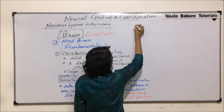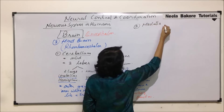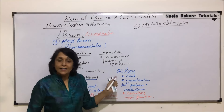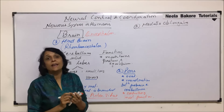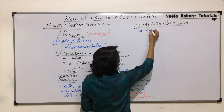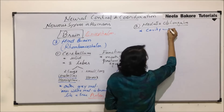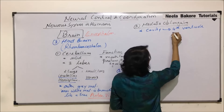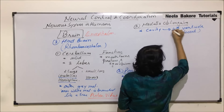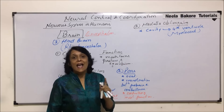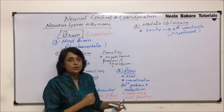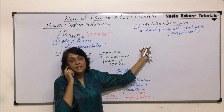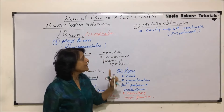The third part is medulla oblongata, which is the last part of the hind brain. It is triangular in shape and hollow — it has a cavity called the fourth ventricle, which is known as mylocele.